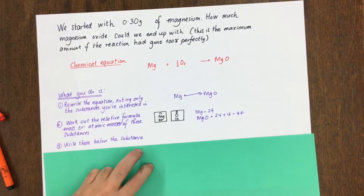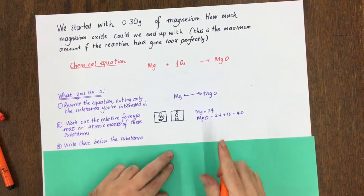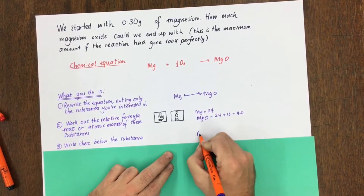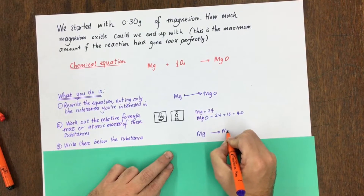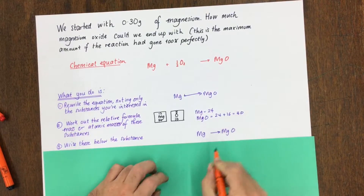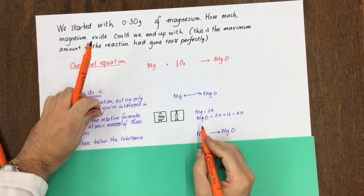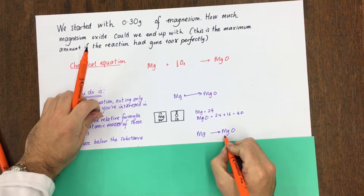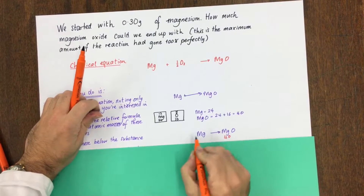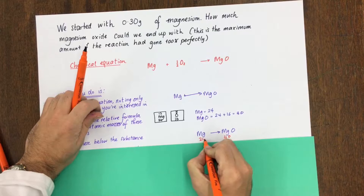Write these below the substance. So we take our equation: Mg goes to MgO. We write these in red to make it clear. We know the relative formula mass of magnesium oxide is 40, and the relative atomic mass of magnesium is 24.